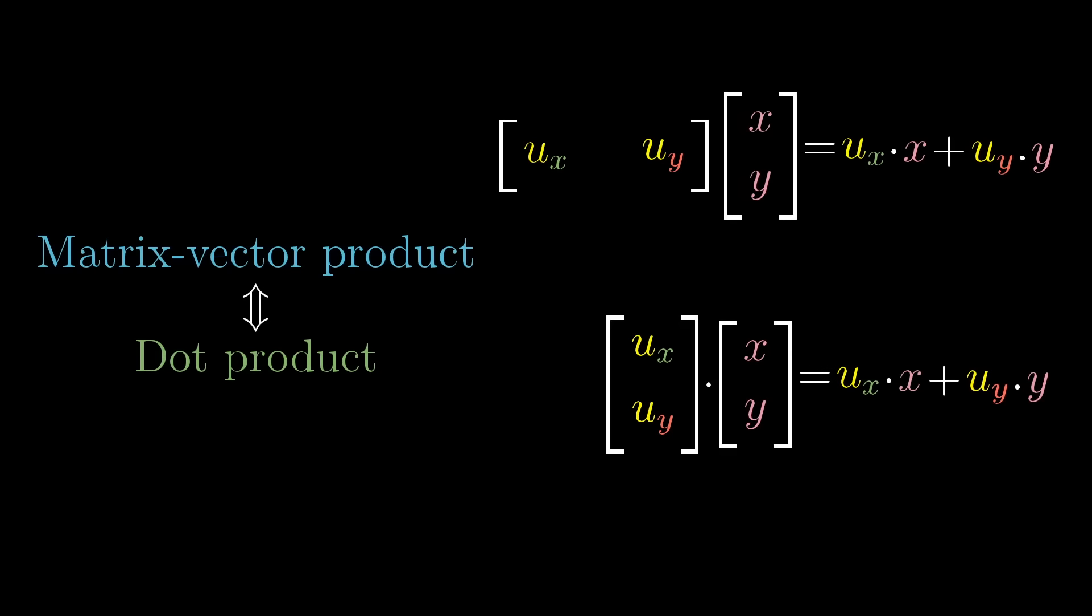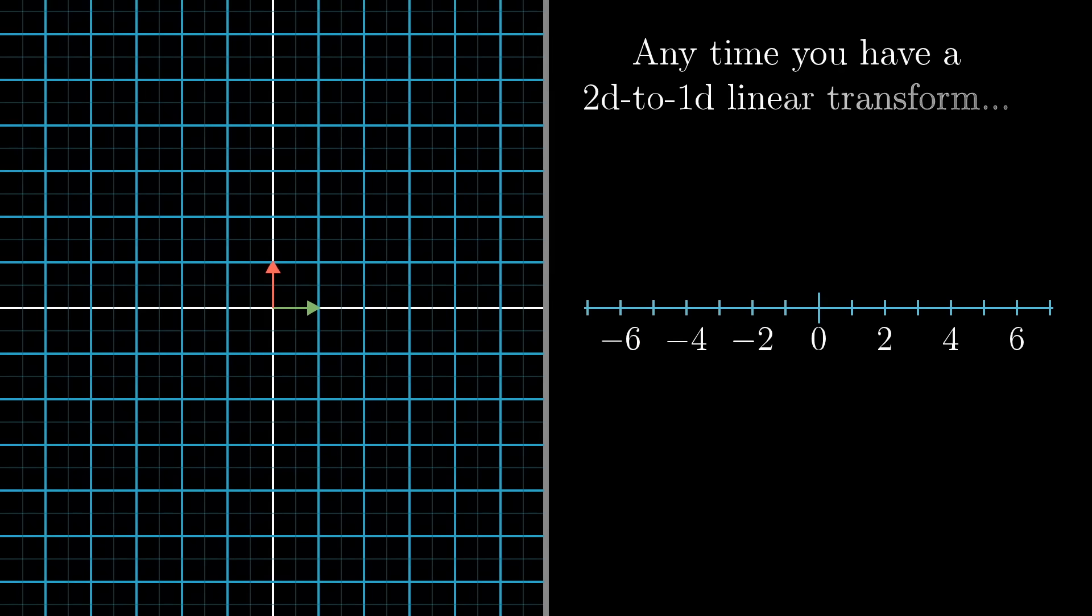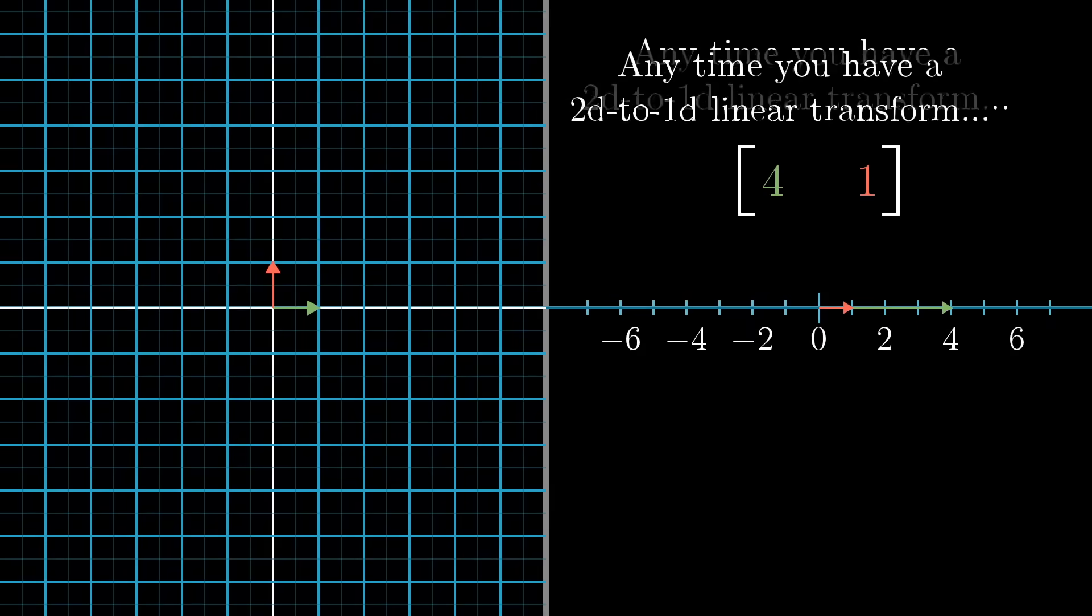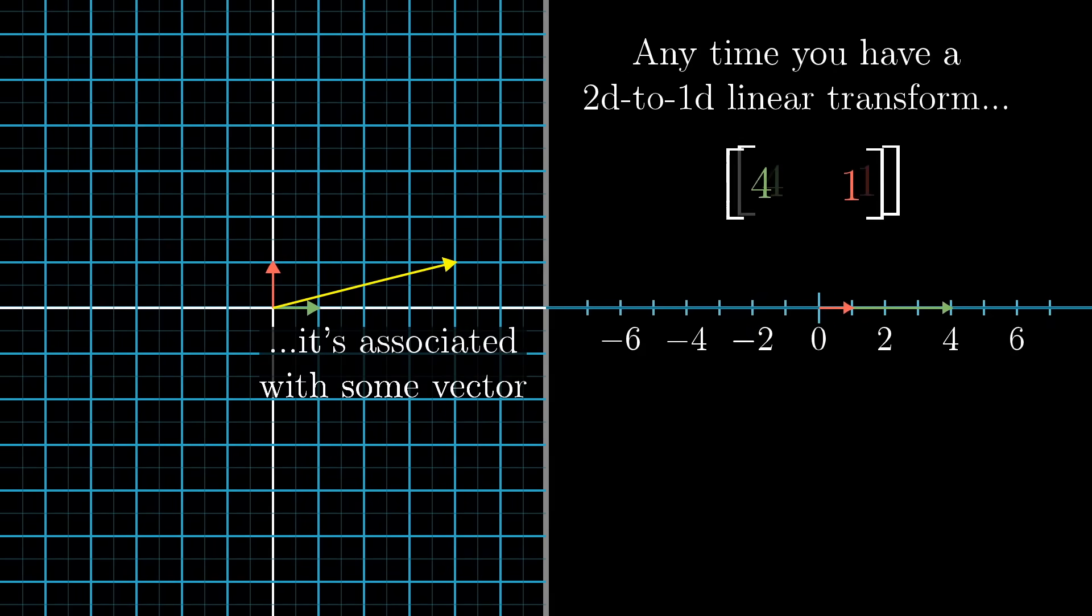The lesson here is that any time you have one of these linear transformations, whose output space is the number line, no matter how it was defined, there's going to be some unique vector v corresponding to that transformation, in the sense that applying the transformation is the same thing as taking a dot product with that vector.